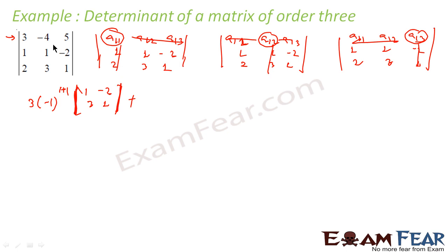And the matrix which I got as 1 minus 2, 2 1, 1 minus 2. Plus this a 1 3, that is 5. 5 into minus 1 to the power 1 plus 3, that is 4. And then this matrix: 1 1, 2 3. 1 1 2 3. So that is my answer. I just have to simplify this.